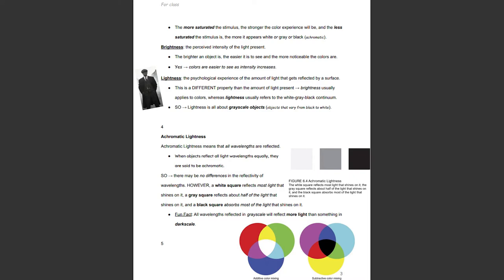Colors are easier to see as intensity increases. Lightness is the psychological experience of the amount of light that gets reflected by a surface — a different property than the amount of light present. Brightness usually applies to colors, whereas lightness usually refers to the white-gray-black continuum. Lightness is all about grayscale objects, or objects that vary from black to white.